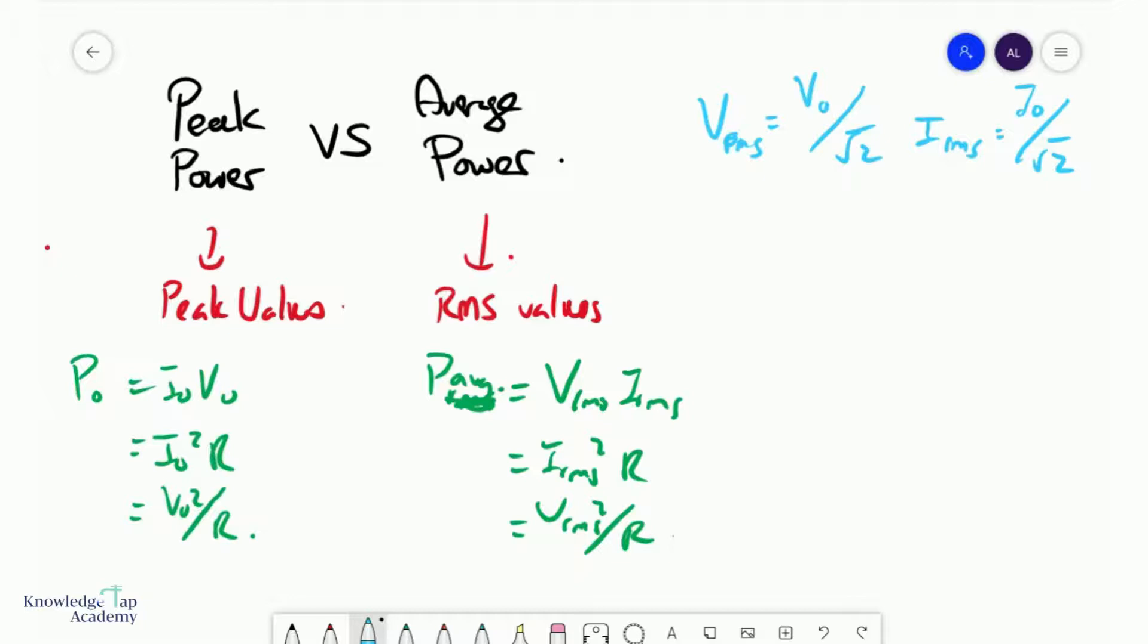The average power dissipated in a resistor connected to a sinusoidal source is VRMS times IRMS, which is V0 over square root two times I0 over square root two, which equals V0I0 over two, which is peak power over two. This gives us a very nice relationship.